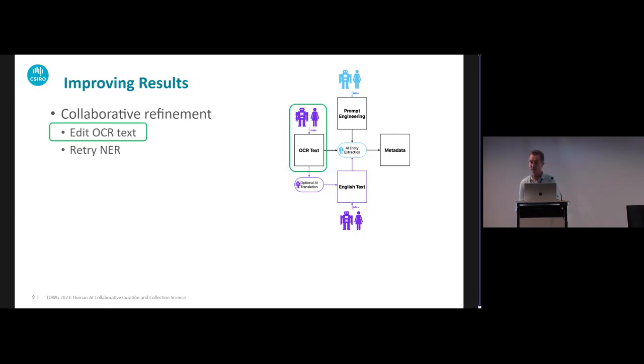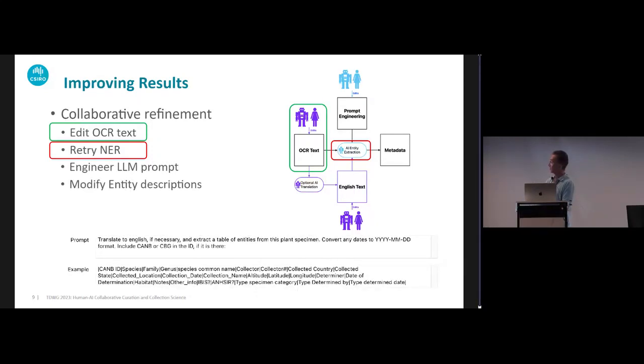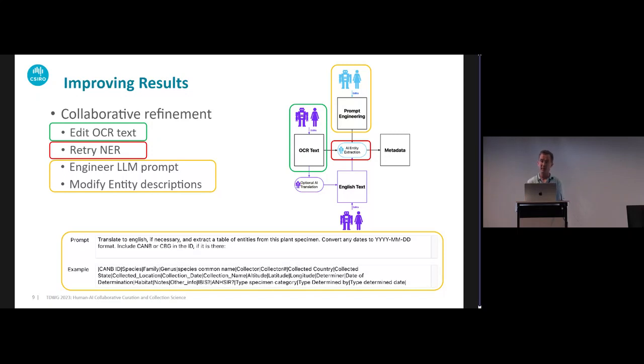How can we improve the results? By using collaborative and interactive refinement. For example, we can edit the OCR text while looking at the context of the specimen image—I don't show that here, but in the prototype you can do all this—but this is not really scalable when you're talking about handling thousands, tens of thousands, or hundreds of thousands of images. We can retry entity extraction using a different model, for example GPT-4 rather than 3.5. We can refine the prompts that we use to provide better context and guidance.